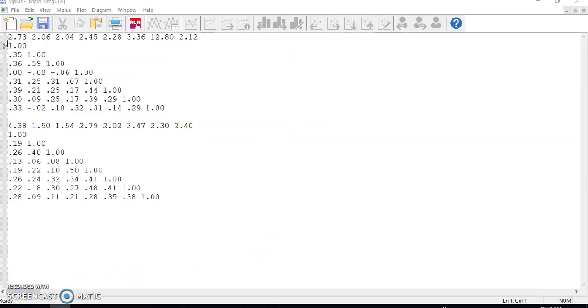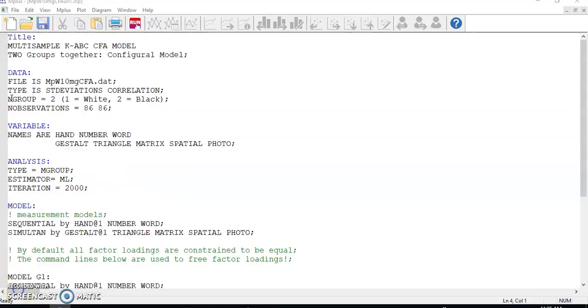In the second step, we combine the two groups together. First, remember to create a data file that has the combined data from all groups together. Starting from the information of group 1, then the data of group 2, until you reach the last group. In the command file, remember to use the keyword ngroup to specify the number of groups and name each group accordingly. In the analysis block, specify type equals mgroup.